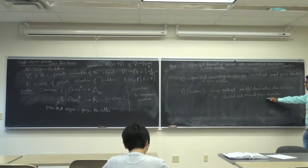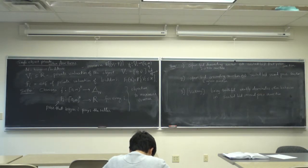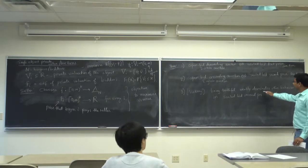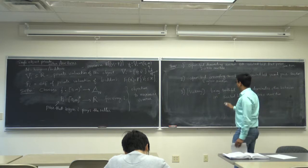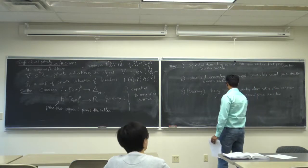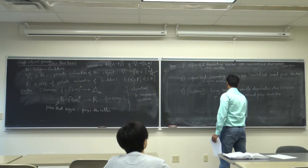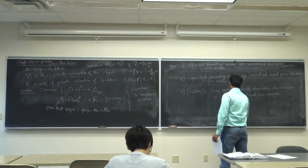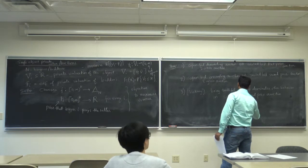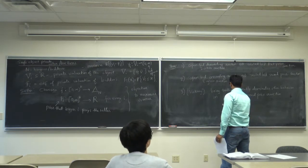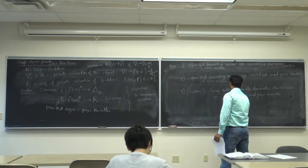The second theorem is that open bid ascending auction — English auction — is strategically equivalent to sealed bid second price auction. The third result, due to Vickrey, is that being truthful weakly dominates other behavior in sealed bid second price auction. This is something we studied in the previous class when we talked about the VCG mechanism. The optimal strategy is gamma_i*(Vi) = Vi at equilibrium.